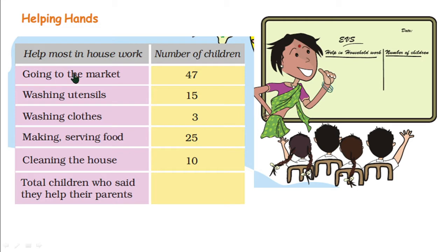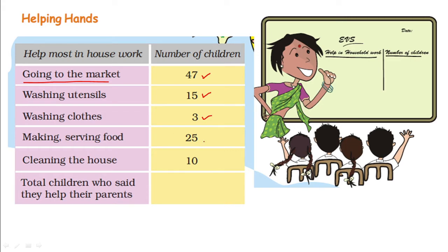She has written the name of the work and here the number of children. Going to the market: 47 children. Washing utensils: 15 children. Washing clothes: 3 children. Making and serving food: 25 children. Cleaning the house: 10 children.